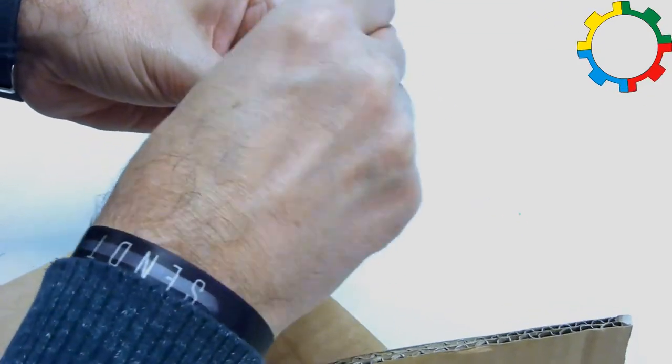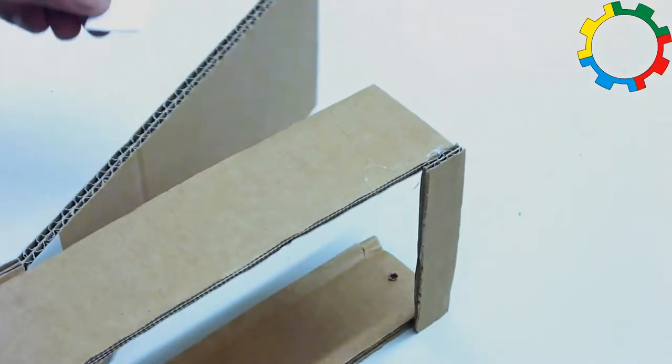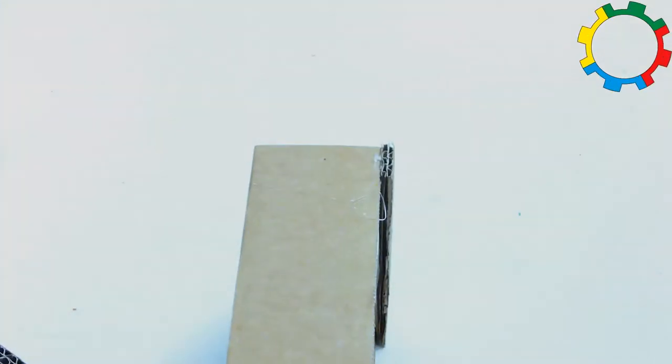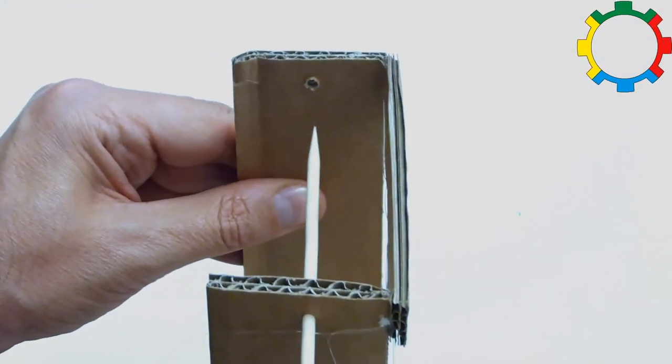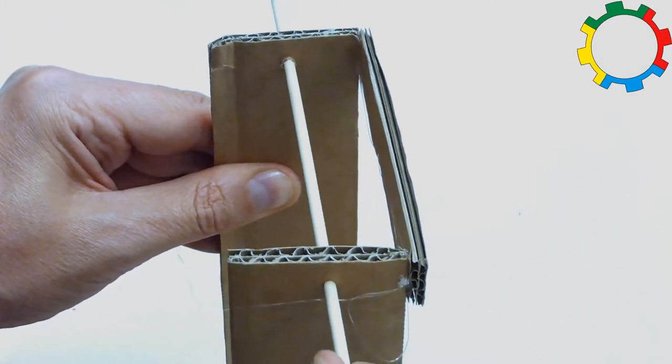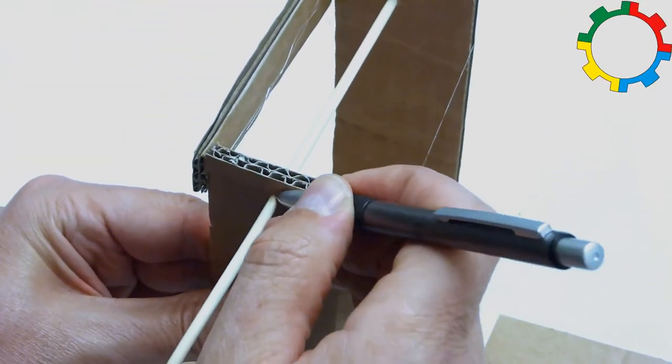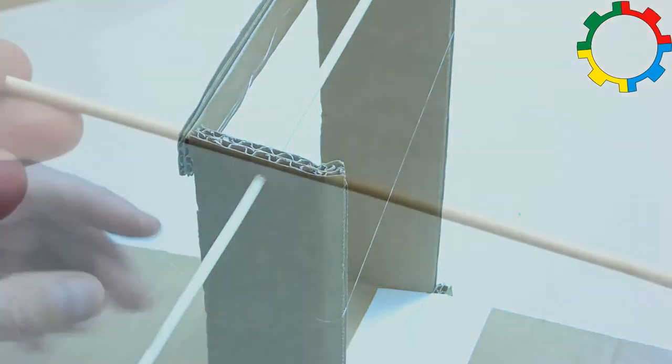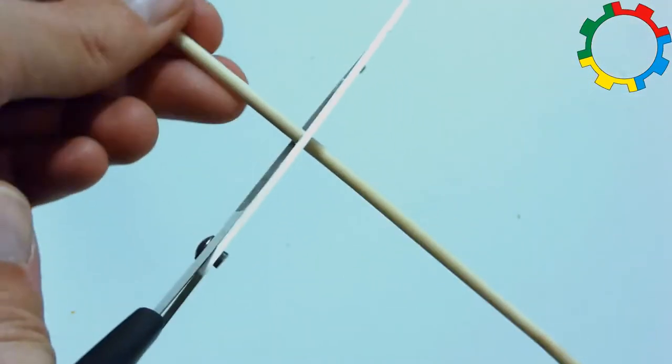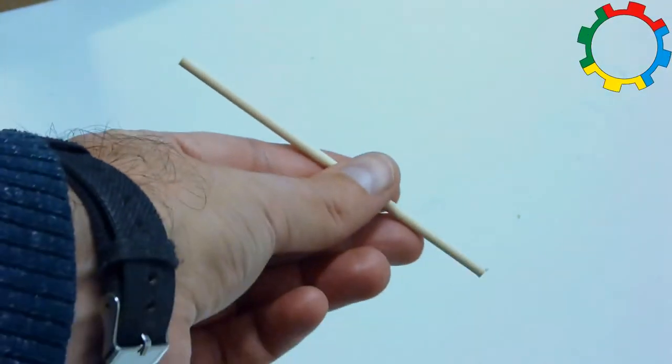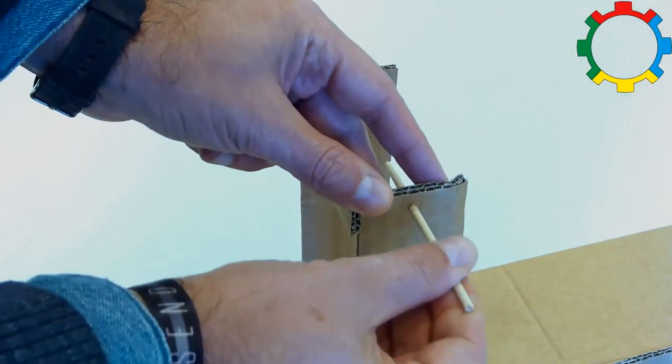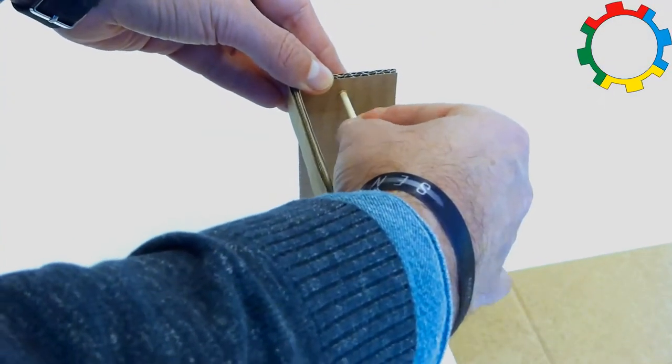Use the pointy end of the skewer to prick a hole in either side of the top of the bridge tower. You might use template F that shows the position of hole 1. Push the skewer through both holes until one end sits in one hole. Mark on the skewer where it sticks out of the other hole in order to measure the length that is needed. Cut the skewer at the mark and insert it between the two holes at the top of the tower. This is pulley 1.